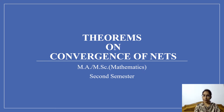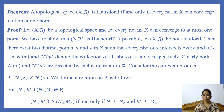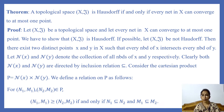In the last lecture, we discussed some theorems on convergence. Today, I will continue on the topic. The first theorem states that a topological space X,T is Hausdorff if and only if every net in X can converge to at most one point. We know that a space is Hausdorff if and only if for every pair of distinct points, there are two disjoint neighborhoods. Let us prove this theorem.